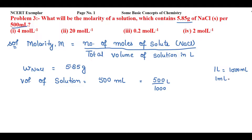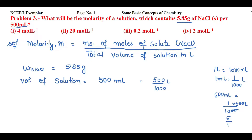So 1 mL equals 1/1000 liter, meaning 500 mL equals (1/1000) × 500 liters. Cancelling the two zeros gives 5 divided by 10, which is 0.5 liter. So 500 mL equals 0.5 liter.